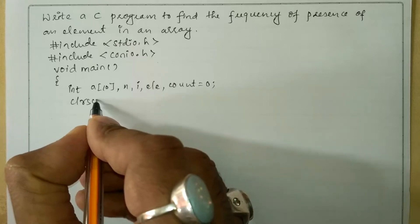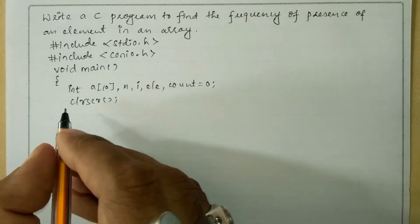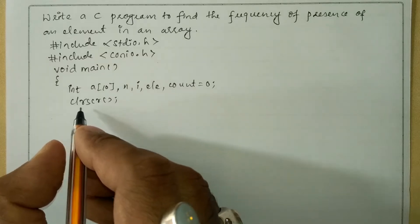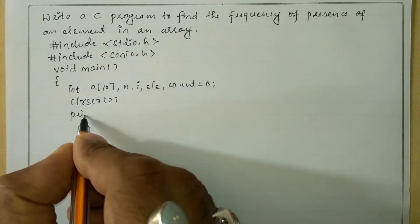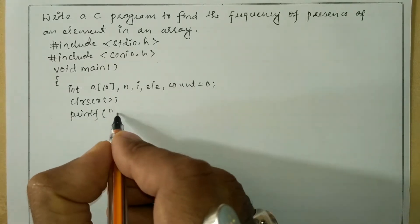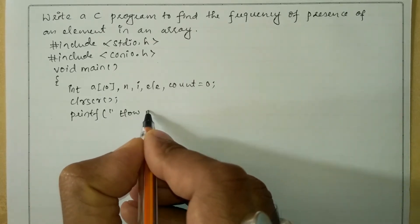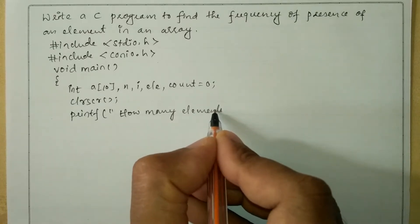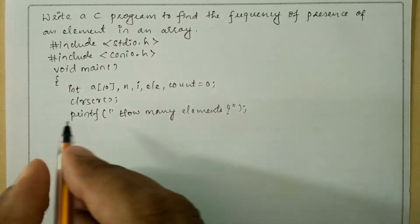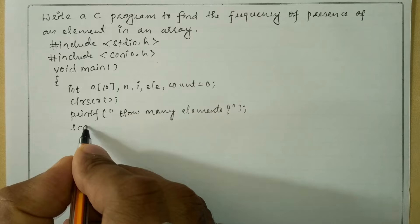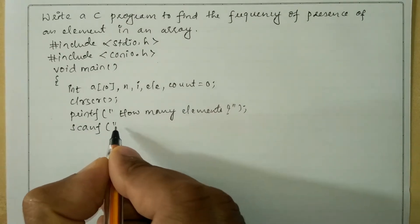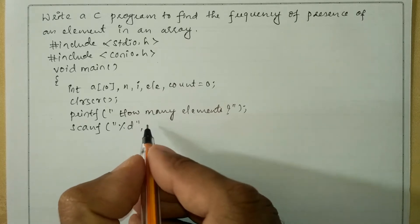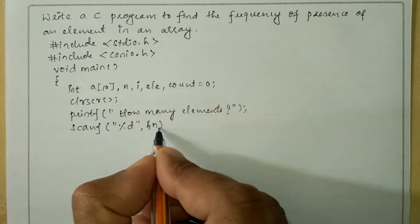Next we will write the clrscr() function which is used to clear the screen. Now we will ask the user how many elements — so we will write a printf statement with "How many elements?". Then we receive the value from the user through keyboard using scanf with format specifier %d and &n.